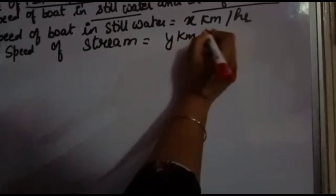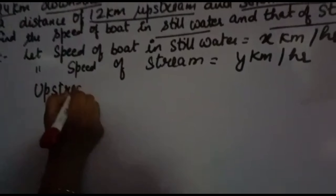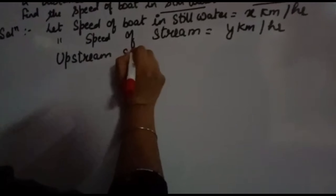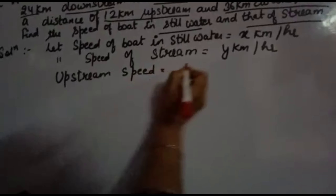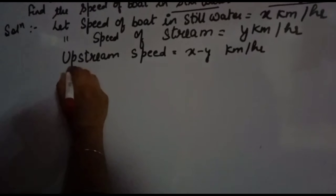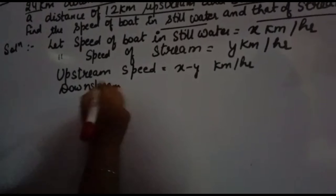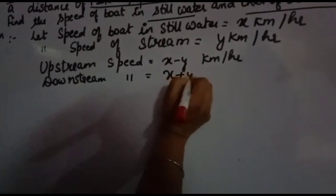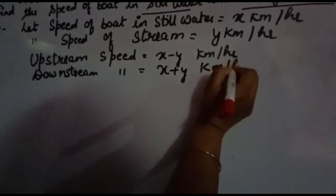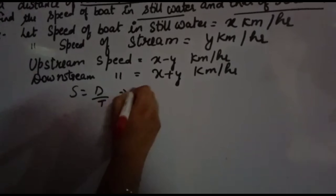Keep this in mind: whenever going upstream, the speed is decreasing, so upstream speed becomes x minus y km per hour. And when going downstream, speed is increasing, so downstream speed is x plus y km per hour.